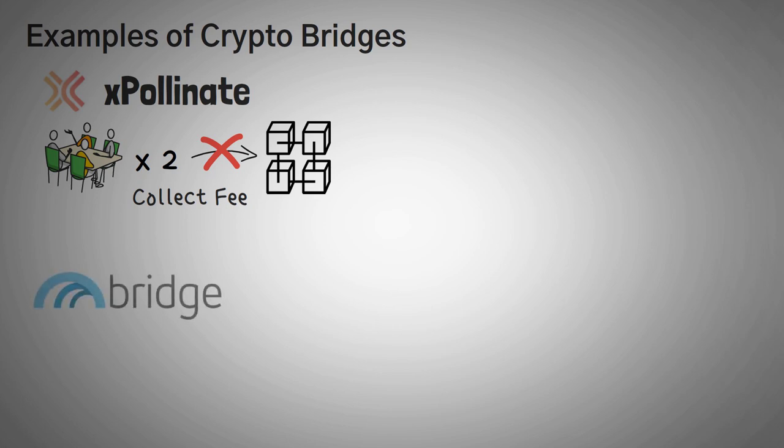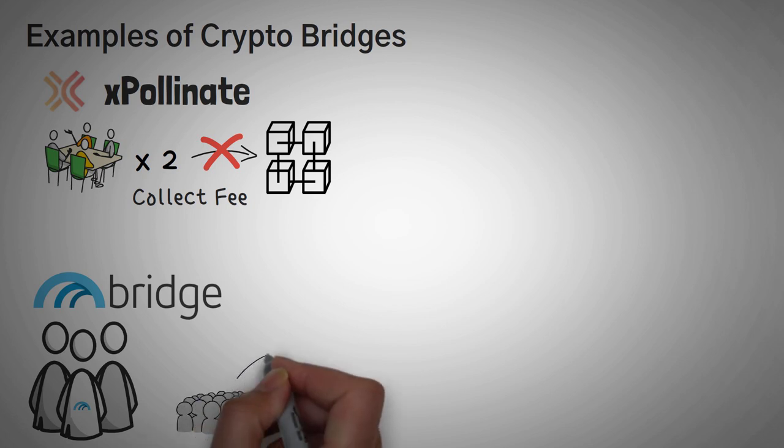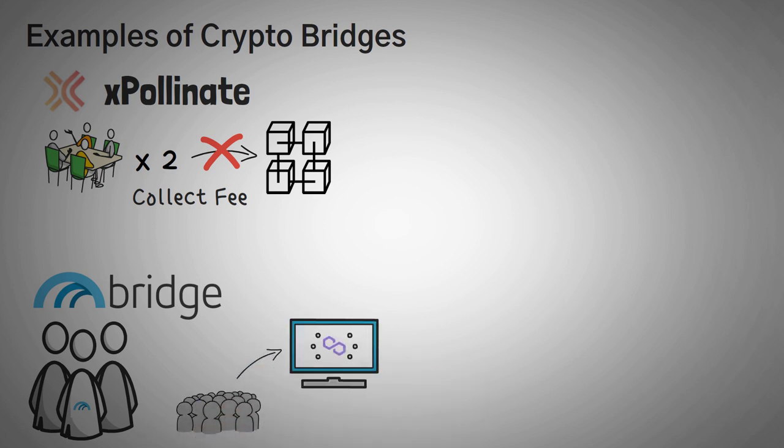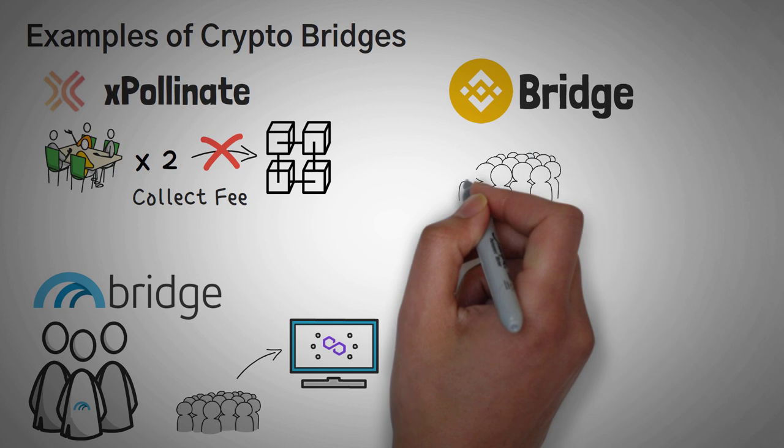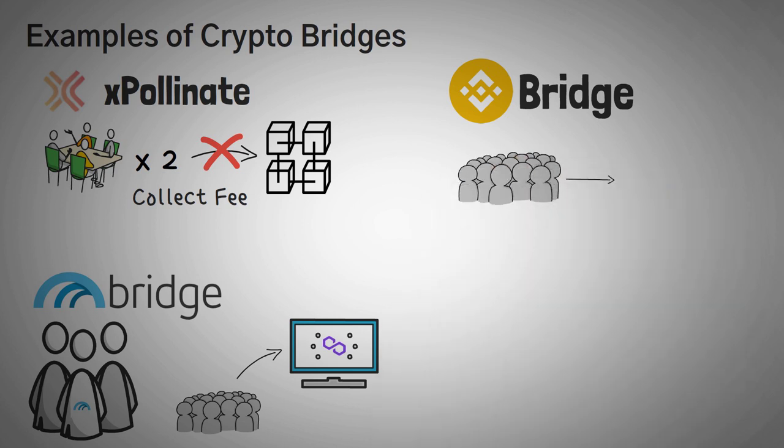Next up is the Matic bridge. This bridge was developed by the Matic or the Polygon team to help get more people onto the true Polygon network instead of Polygon on the Ethereum network. And, lastly, we have the Binance bridge. This bridge was actually created by the Binance company to also help onboard people from other cryptocurrencies to move to the Binance smart chain.